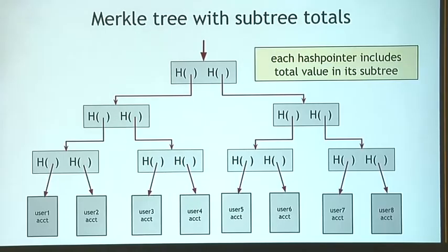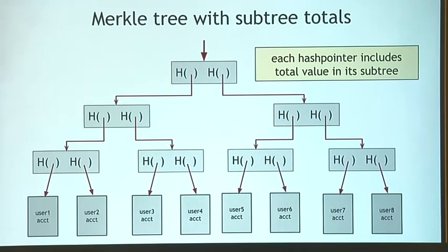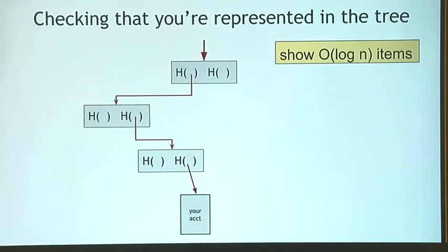So the scheme works as follows: first, the exchange builds a Merkle tree including all customers' accounts at the bottom and sums total values up to the top. Then customers — or realistically those willing to go to the trouble — demand to see the partial subtree including their account and verify everything adds up. If that works, we can believe the organization is correctly reporting all of the accounts they have. Or to be more precise, they can claim to have more accounts than they really have — all they're proving is that every actual account appears somewhere in the tree.